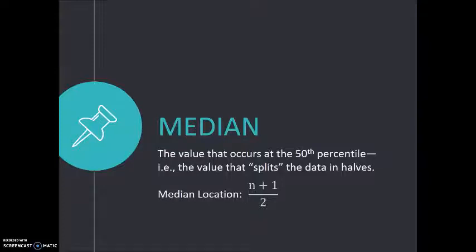You can locate the median in a set of scores by taking the count of the scores, adding one and dividing by two. Now, please keep in mind this is the location of the median, not its value. So what that means is this tells you which number when your values are in order will be your median value. It does not tell you what that number is. It tells you where it is.